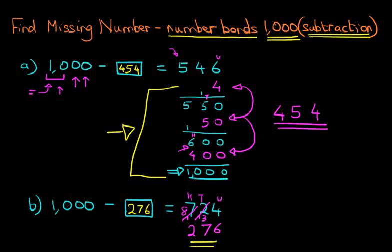Okay, the workings is me showing you the process step by step. So that is how we find the missing number for number bonds to 1000 with subtraction questions.